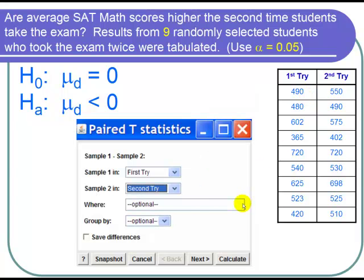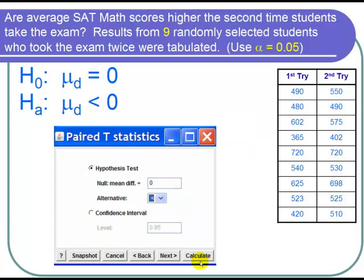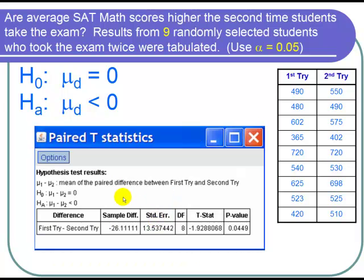I click Paired and put in first try for sample one, second try for sample two, and I have sample one minus sample two. Notice if we want to show that is negative, sample one should be the first try and sample two should be the second try. Then I hit Next and select hypothesis test. I want the mean difference to be equal to zero for the null hypothesis, and the alternative is that the mean is less than zero. I hit Calculate and here are my statistics.